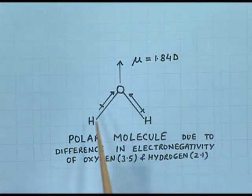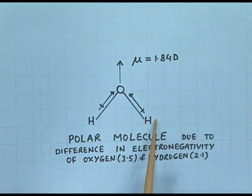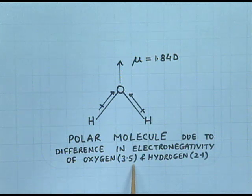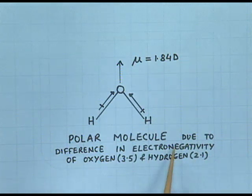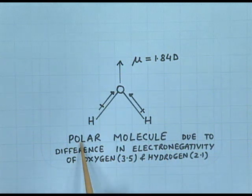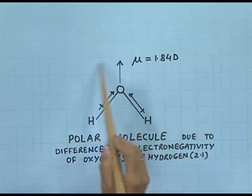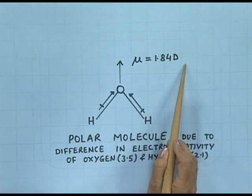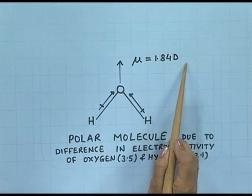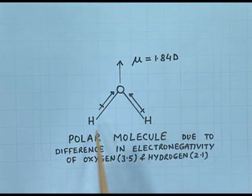Oxygen is more electronegative than hydrogen. The electronegativity of oxygen is 3.5 and that of hydrogen is 2.1. Due to this difference in electronegativity, there is a dipole in the water molecule. The value of the dipole moment is 1.84 Debye, and the water molecule is polar.